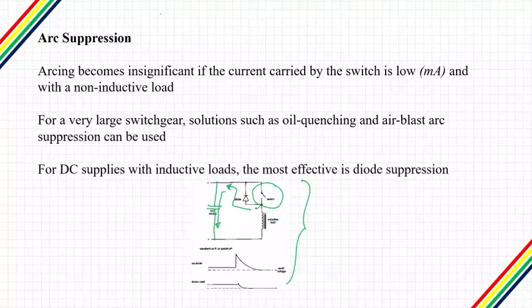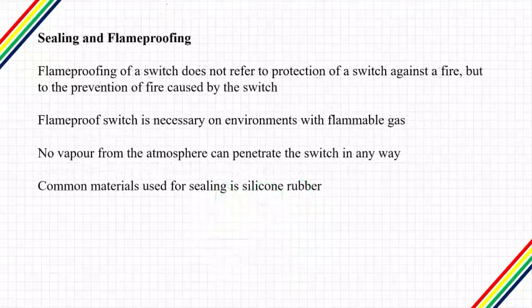Diode protection is much less effective when the circuit operates at a higher voltage — for example 100 volts or more — because the voltage across the contacts cannot be less than the supply voltage, and this is large enough to promote arcing. The arcing will however be considerably less severe than it would be without the diode. Whatever voltage level is used, the diode must be adequately rated both for the voltage and for the current that can flow.